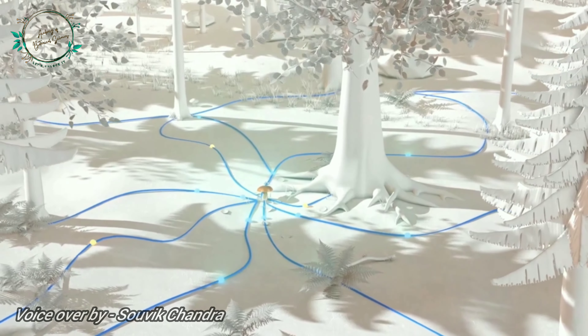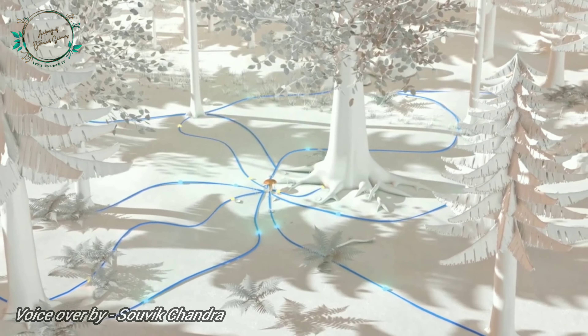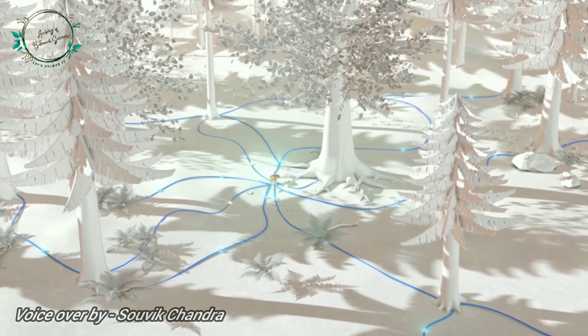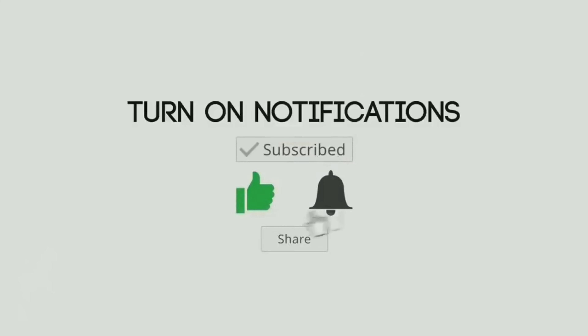Both partners benefit: fungi help the tree to get water and minerals, and trees give sucrose to help the fungi survive. They create a network between the trees via the fungal connection. A strong tree can exchange nutrients with its neighbors through the mycorrhizal fungi's underground mycelium.